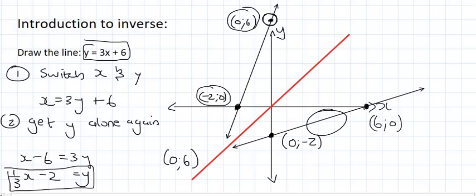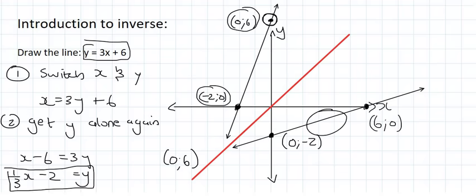So notice what we did in this video: we drew the original function, then flipped all of its coordinates around to draw the inverse, and I also showed you how to get the equation of the inverse by switching your x and y values in the equation and then getting y alone. The key point is you don't need the equation of the inverse to draw it — you just need the original graph and then switch all of its coordinates around.